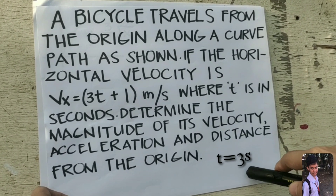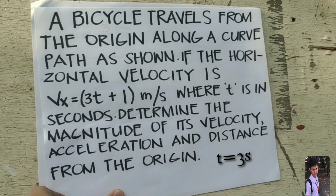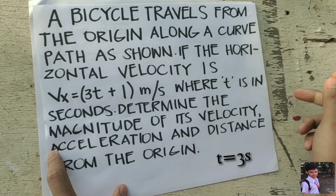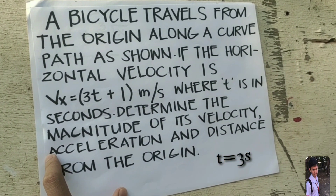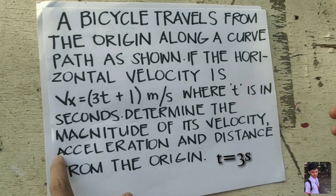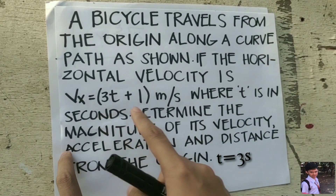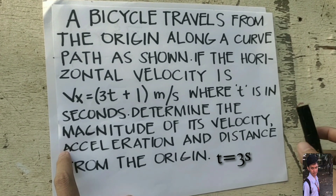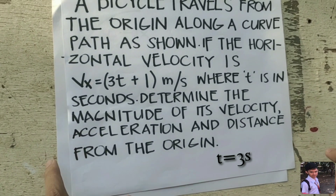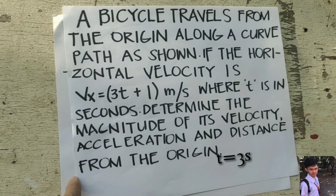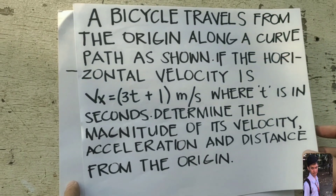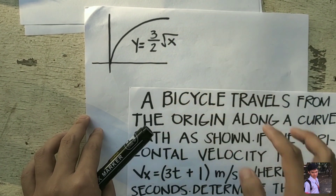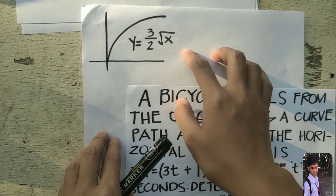Welcome back to our channel. Let's start by reading the question. A bicycle travels from the origin along a curved path as shown. If the horizontal velocity is vx equals 3t plus 1 meter per second where t is in seconds, determine the magnitude of the velocity, acceleration, and distance from the origin.